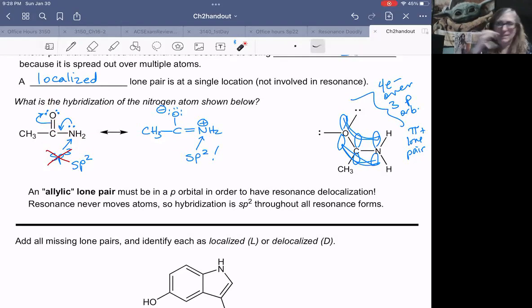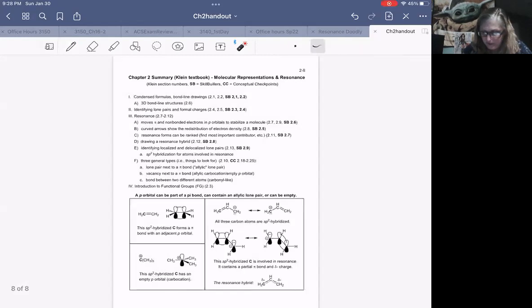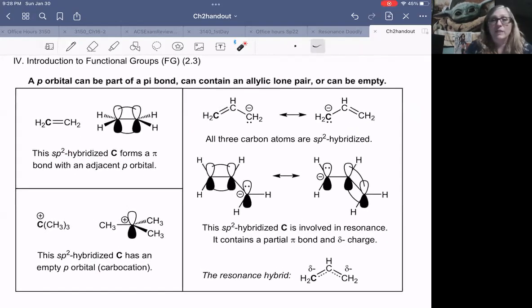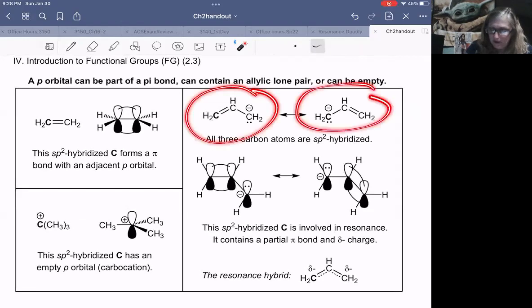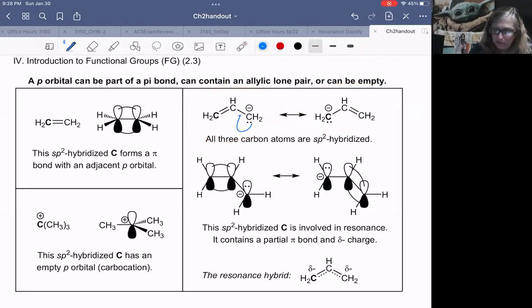Let me jump to that picture because that might help. This is another picture of an allylic lone pair doing resonance. Lone pair becomes a pi bond, pi bond becomes a lone pair. As soon as I do that resonance, that means that the lone pair must have been in a p orbital to do that. In fact, all three carbons in this allylic system are sp2 hybridized.